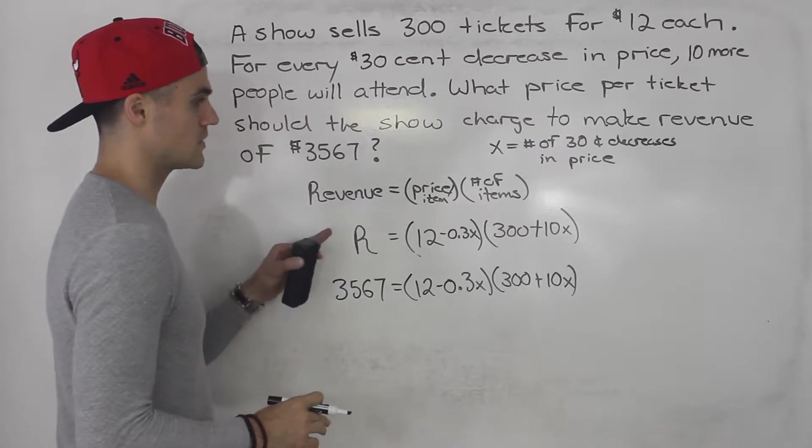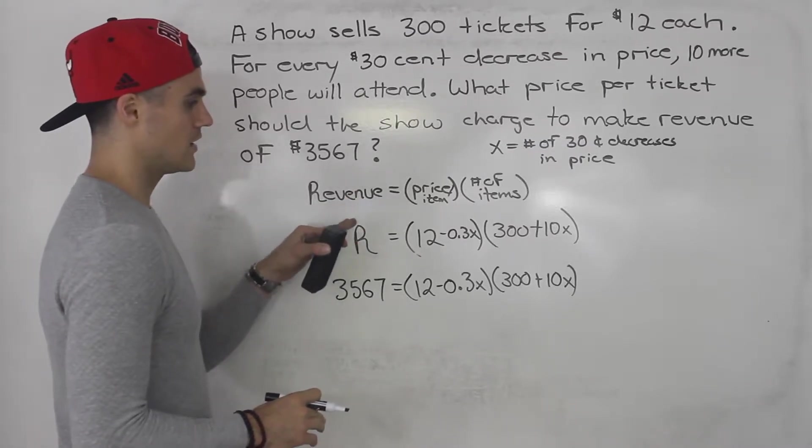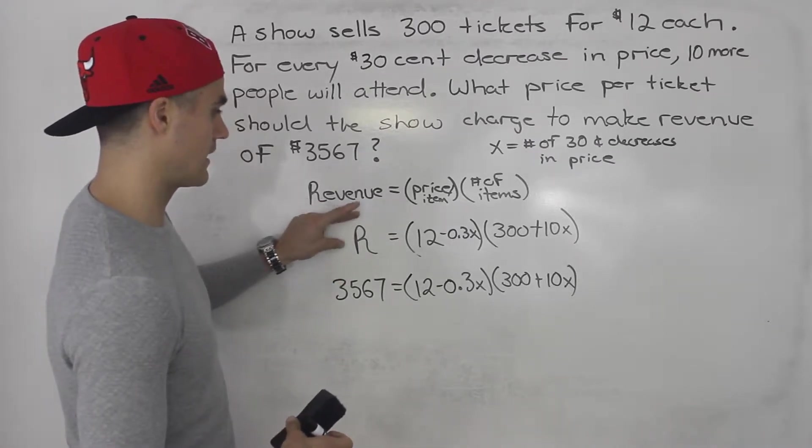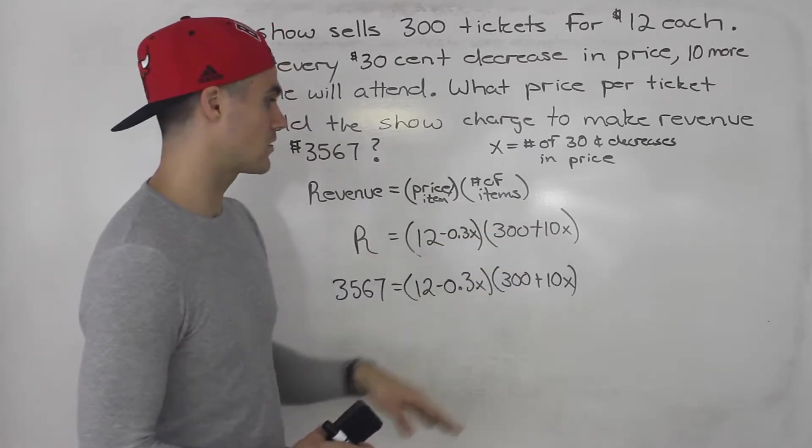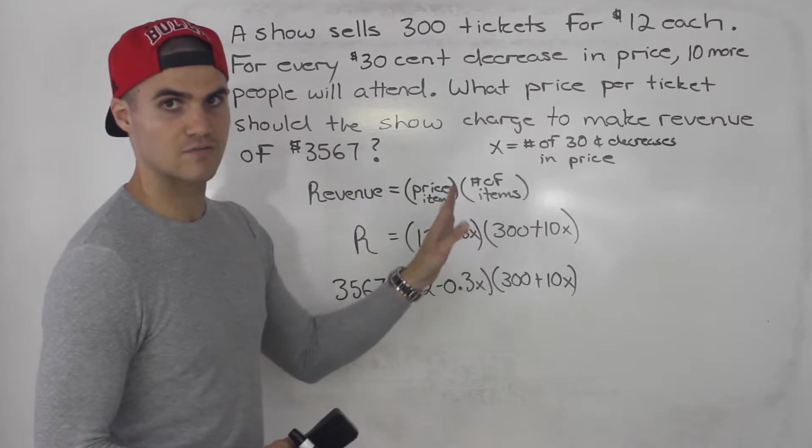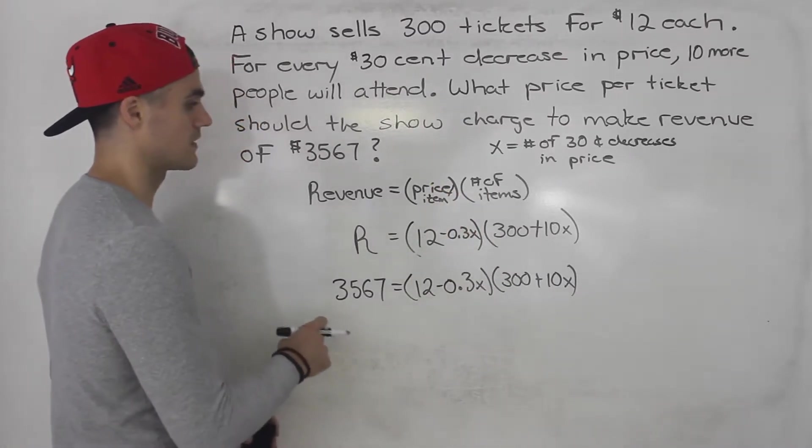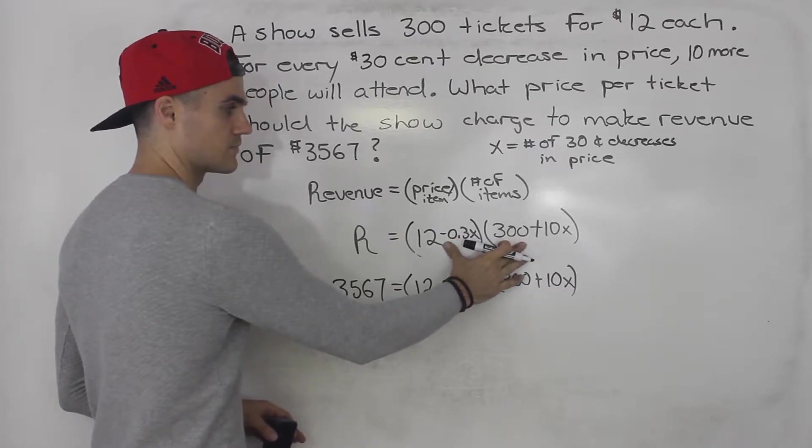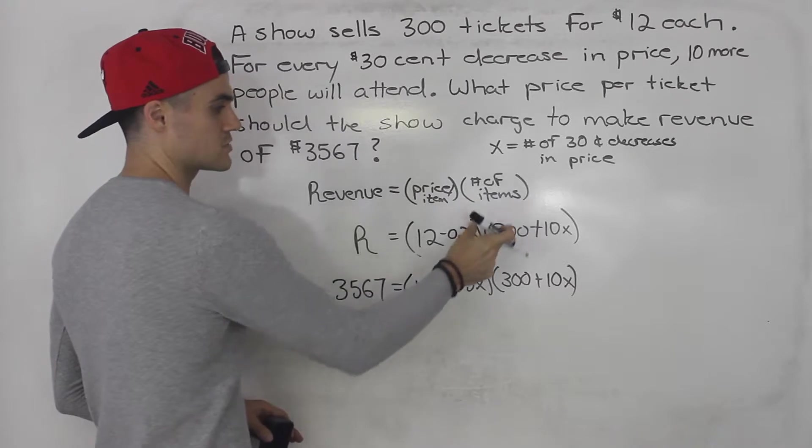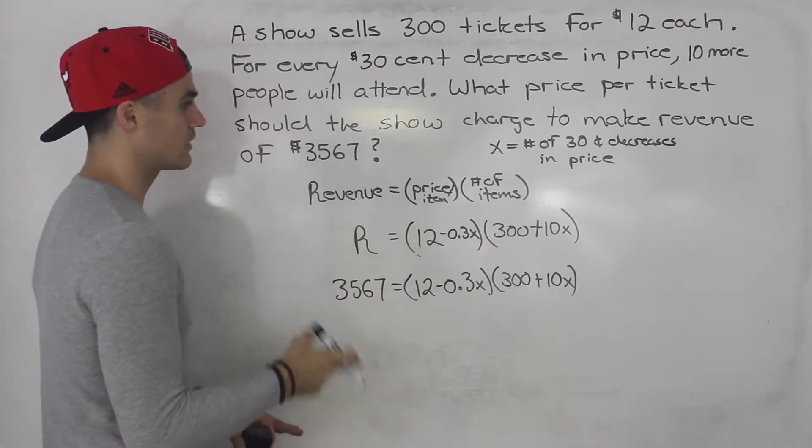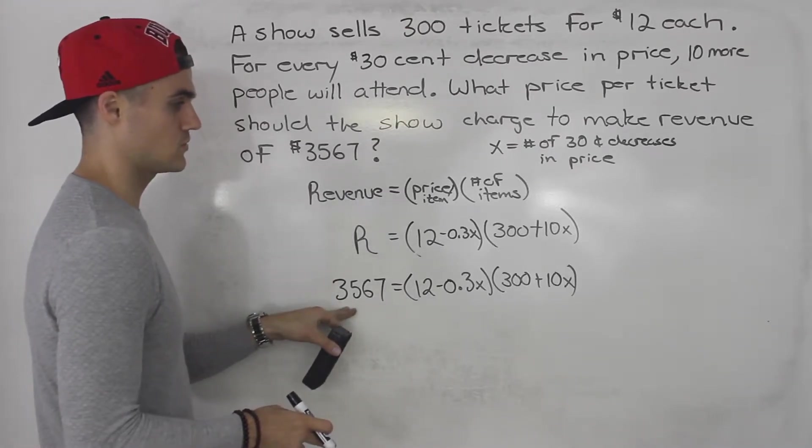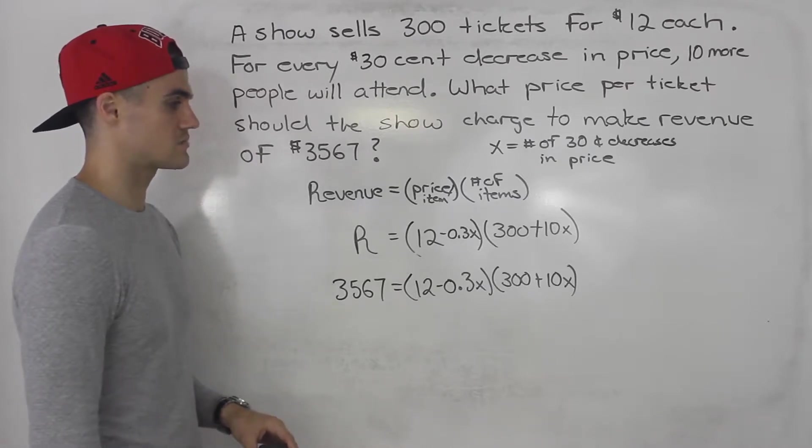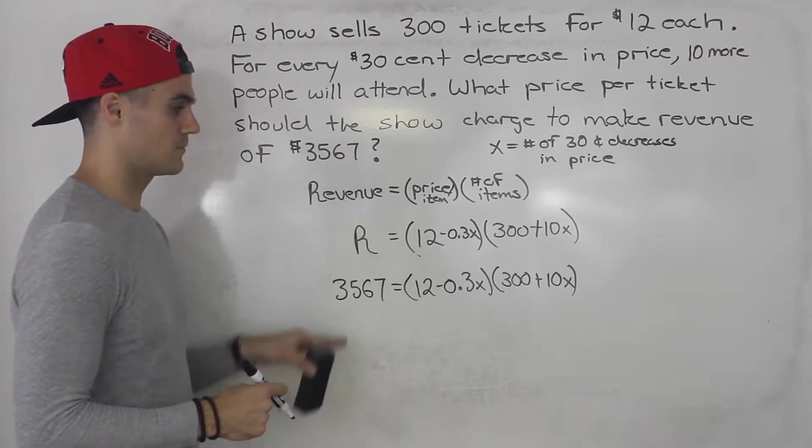Now, one thing I want to mention is this question is similar to other revenue questions we've done. But usually what they've been asking us before is to find the maximum revenue. So we're not plugging in anything for R in those cases; we are expanding this and completing the square, or you can find the intercepts and then find that max vertex that way as well. So basically, in those questions, when they're asking for the maximum revenue, they're asking for the vertex of this function. But in this case, they're giving us a specific revenue. So we have to plug that revenue in here and solve for x. We're not finding the max, we are solving for x.